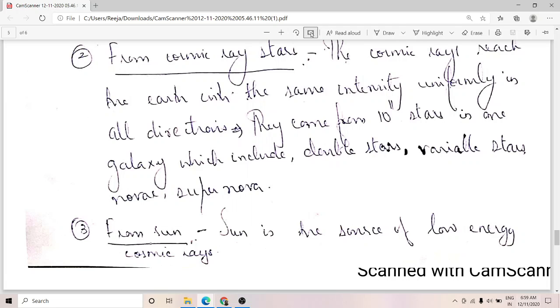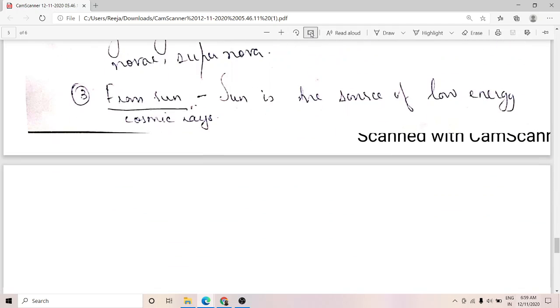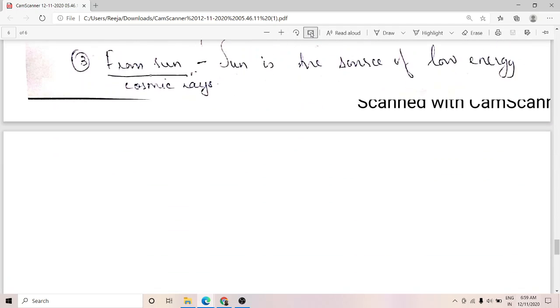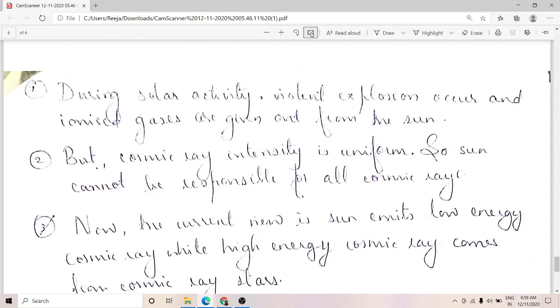The next theory is that they are coming from the sun. The sun is considered a source of low energy cosmic rays. It is told that during solar activity, violent explosions occur and ionized gases are given out. But this occurs erratically at different instances. Solar activity is not a uniform process, but the cosmic ray intensity is found to be uniform. So the sun cannot be considered responsible for all cosmic rays.